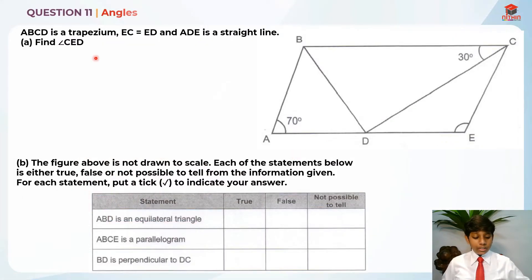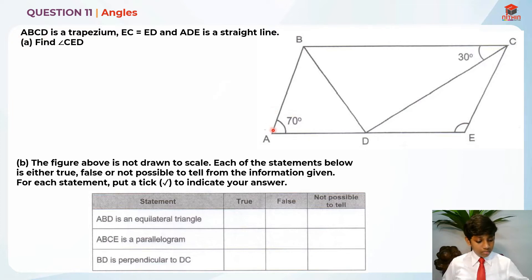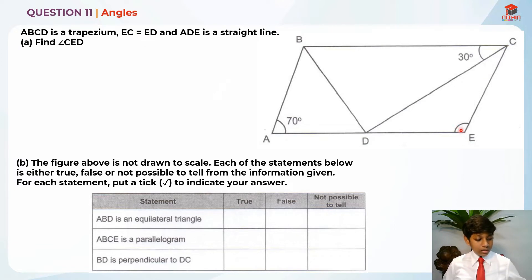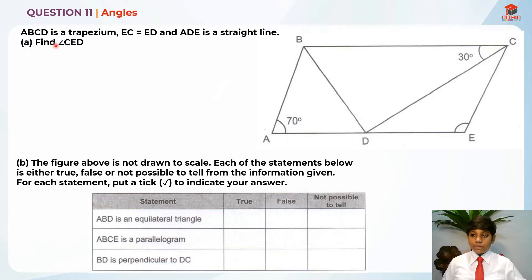This is question 11 and it is testing us on angles. Let's read the question for part A. ABCD is a trapezium. EC is equal to ED, and ADE is a straight line. For part A, they are telling us to find angle CED, which is over here.